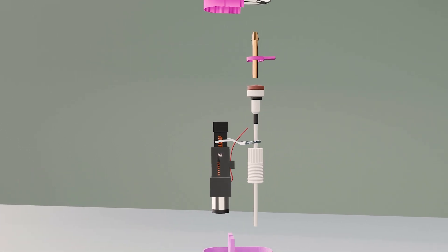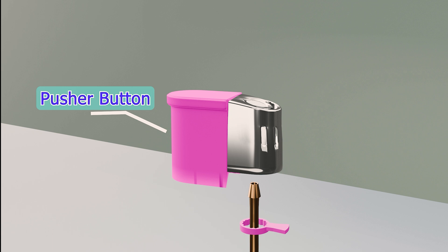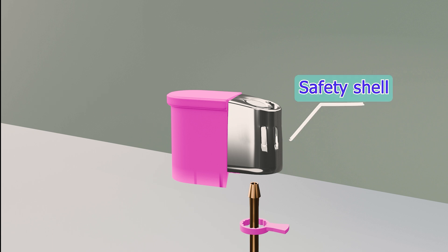A lighter may look simple, but it has many important parts. Pusher button, the part you press to start the process. Safety shell protects the inner components.